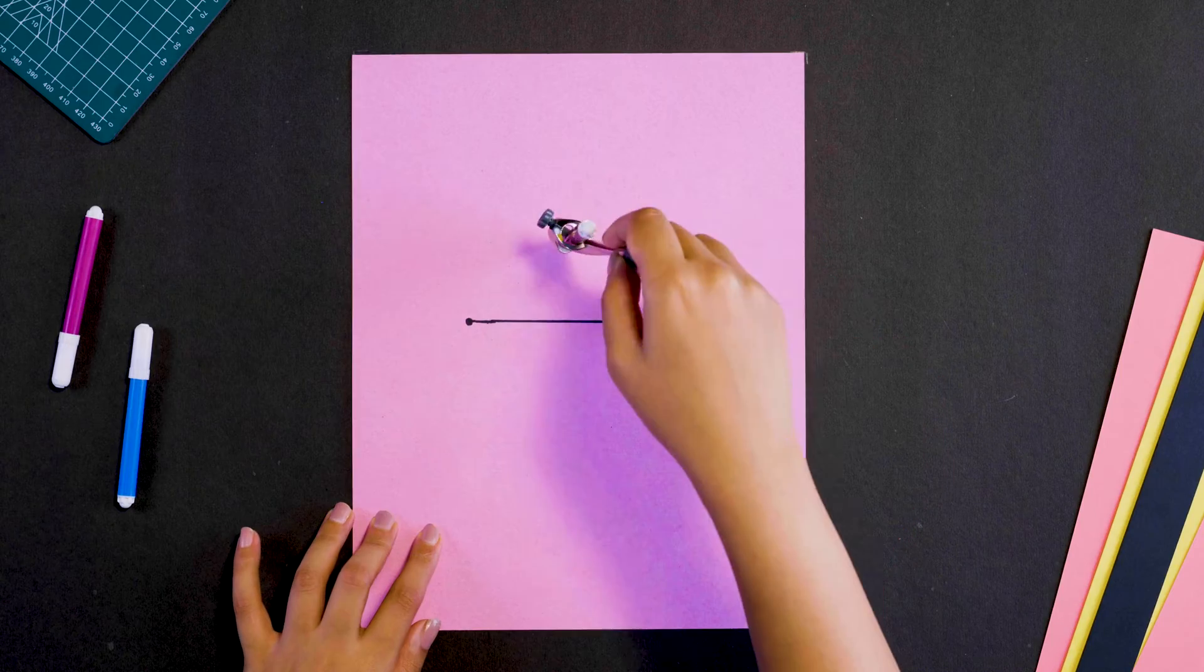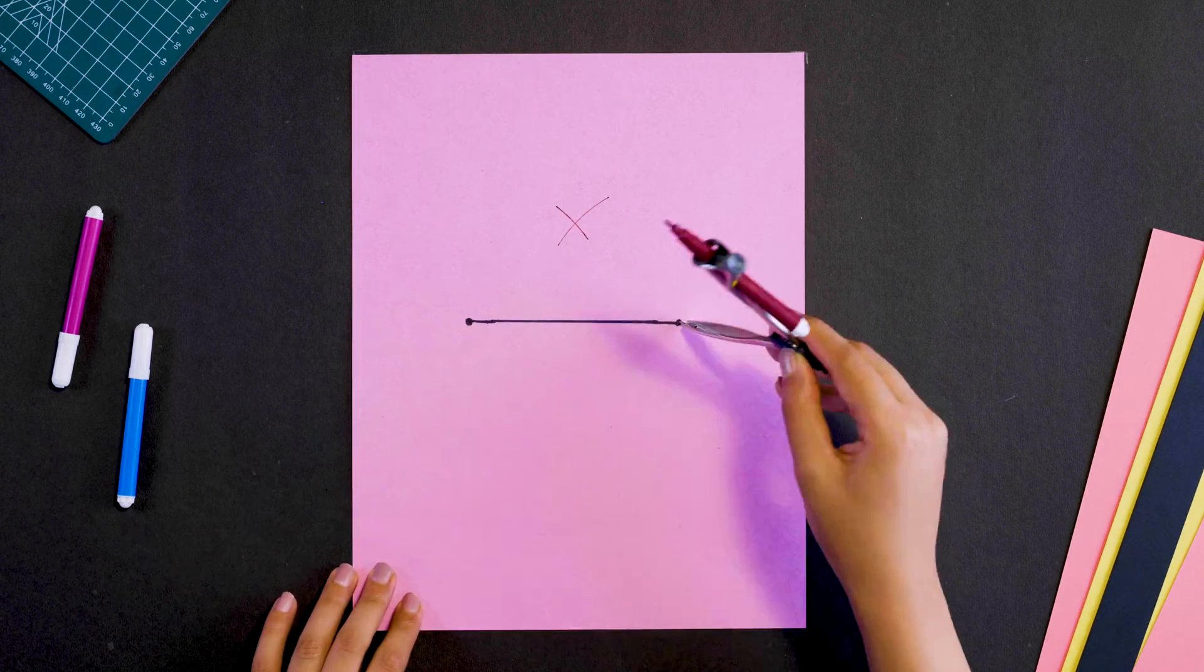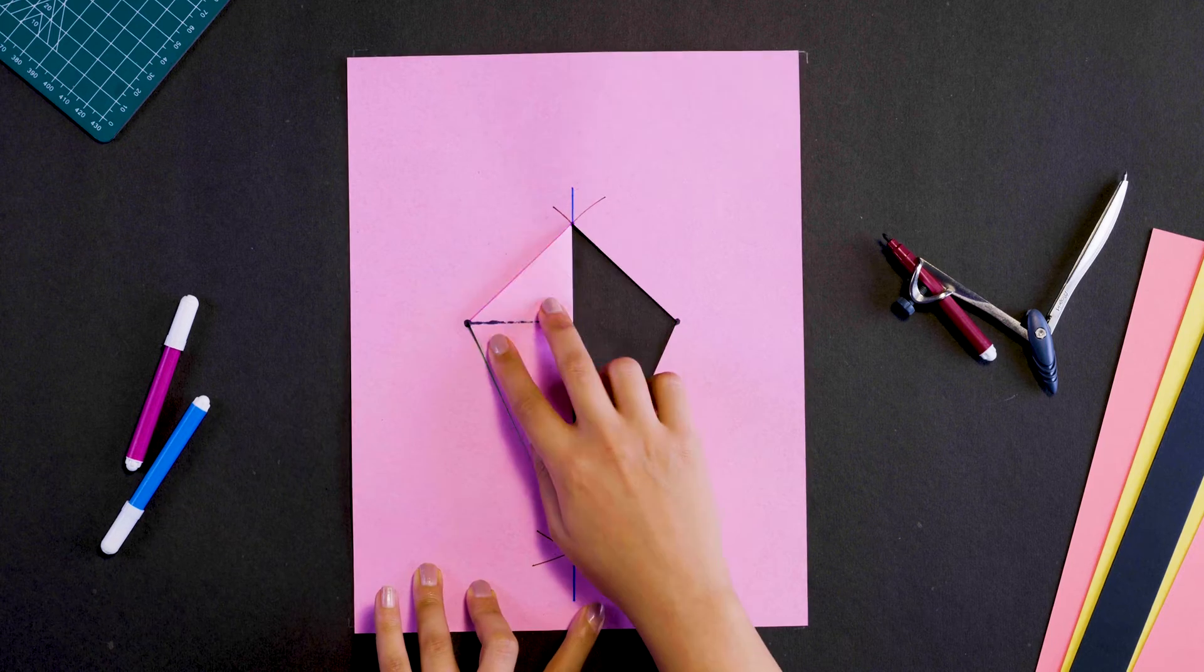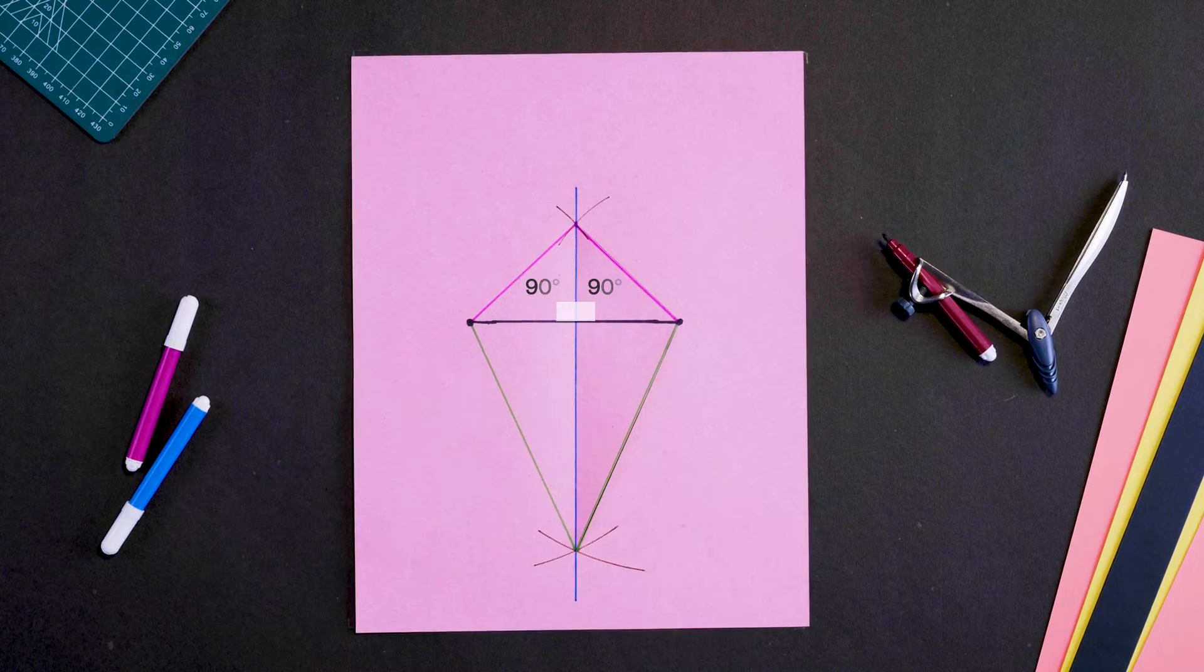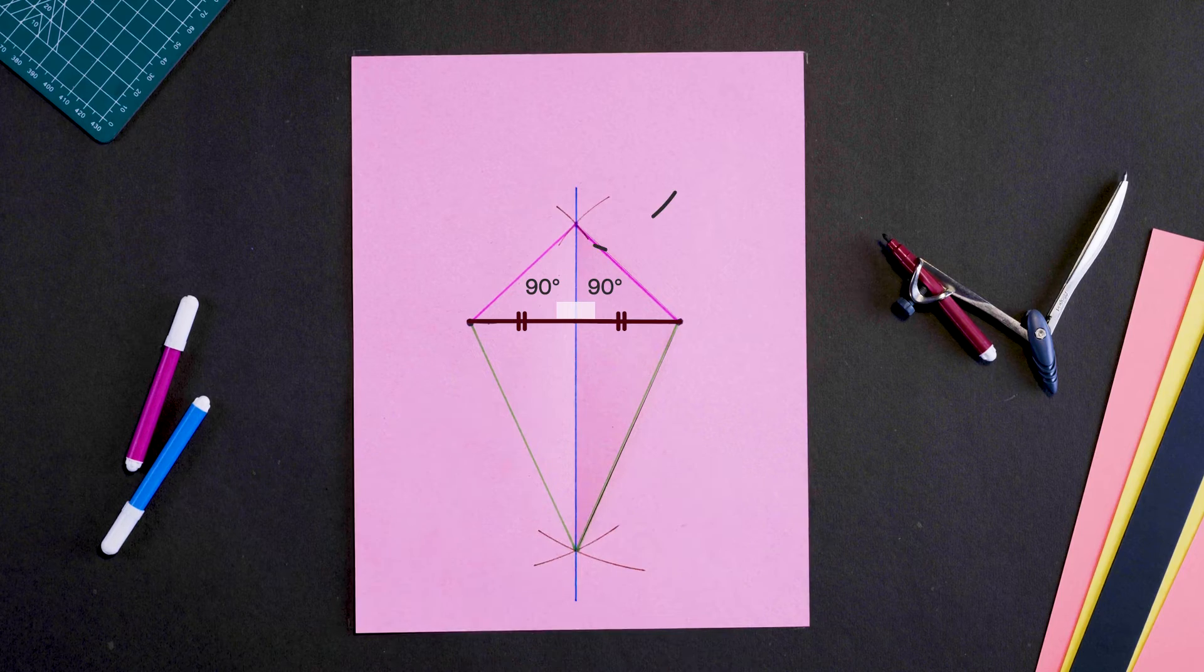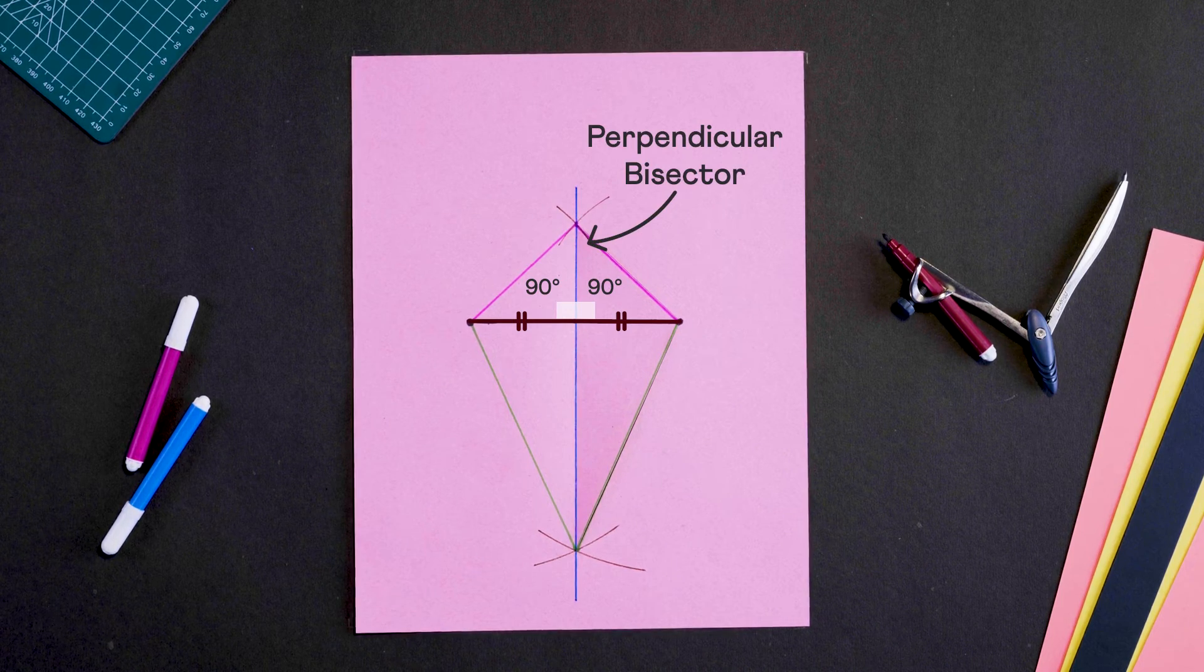In fact, if we take a different radius on the opposite sides, the construction would still work. Because again, by symmetry, these two angles are 90 degrees each and these two lengths are equal. Making this line the perpendicular bisector of this segment.